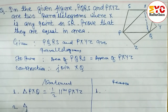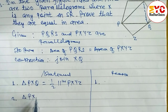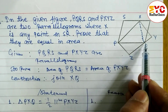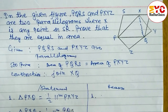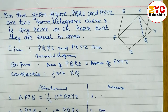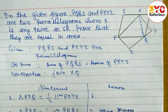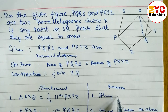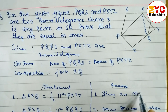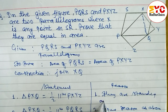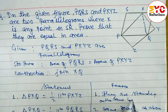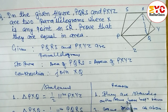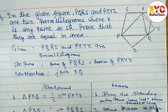Statement 2: Triangle PXQ is equal to half of parallelogram PQRS. Same reason — they are standing on the same base between the same parallel lines.